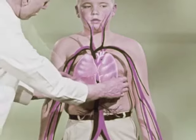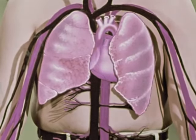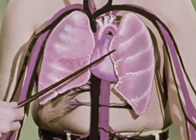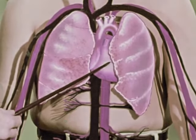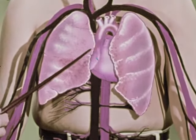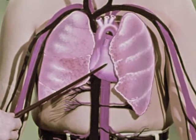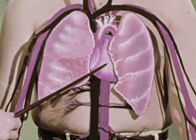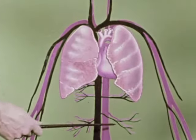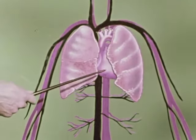The lungs are important to this system. As it circulates, all the blood in the body must pass through the lungs. The blood moves in a continuous stream: from the heart, through the body, back to the heart, through the lungs, back to the heart. Blood moves continually through this circulatory system — heart, body, heart, lungs, heart.